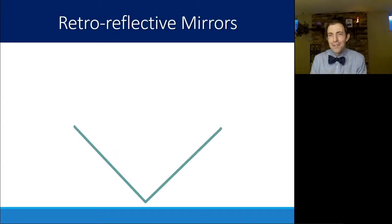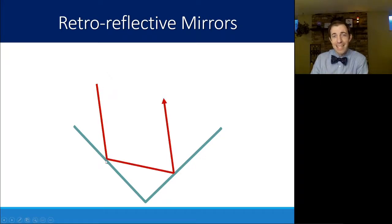The final example that I want to share about reflection, because it's a fairly simple concept, is a way that you can produce something that's called a retroreflector. A retroreflective mirror is just two mirrored surfaces that are perpendicular to each other. If you want to make one that's in 3D, you have a third. So it's like the inside corner of a cube. Now, if I send a light ray here, it actually bounces twice.